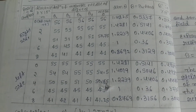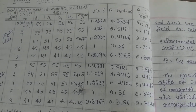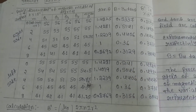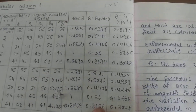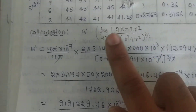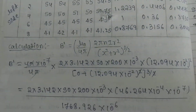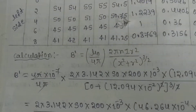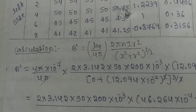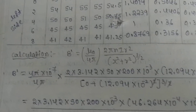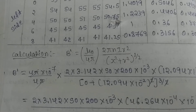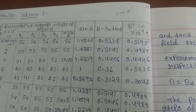By taking the mean of the deflections you get mean theta values, then calculate tan θ values. The formula for experimental calculation is B = B_H × tan θ, where B_H is a constant. For the theoretical calculation, you use B dash with the formula involving μ₀, the radius of the coil (measured from the circumference), x as the distance, n as the number of turns, and I as the constant current. Substituting all data gives different B dash values.